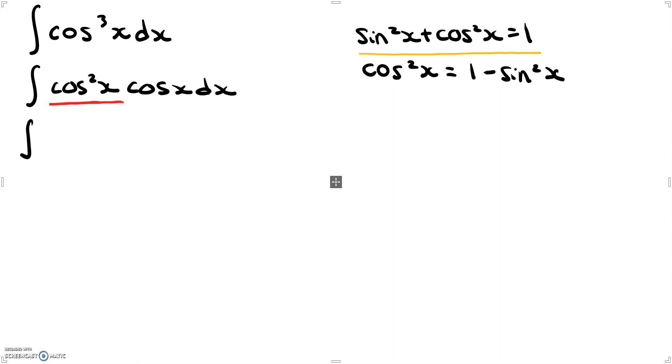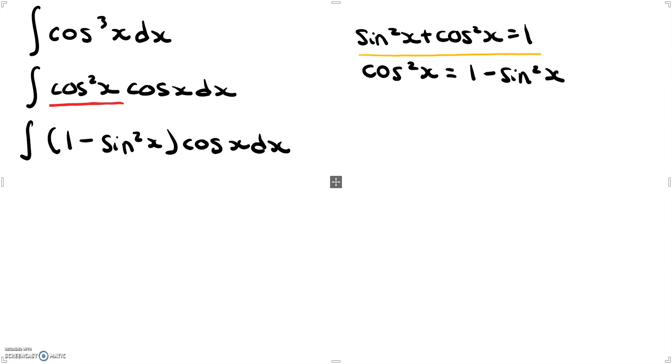So we're going to rewrite that like 1 minus sine squared x times cosine x dx. Okay, so now that we have this, we are going to want to make a u substitution.